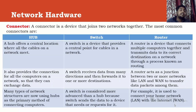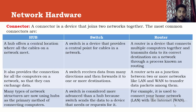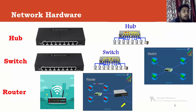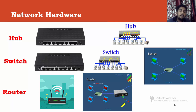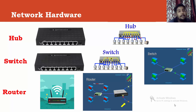The next network hardware is a connector — a device that joins two networks together. The most common connectors are hub, switch, and router. From the name, it is clearly understandable that a connector is connecting something. Hub and switch look almost the same, whereas a router looks a little different. Most houses that have a Wi-Fi connection will have a router at home.